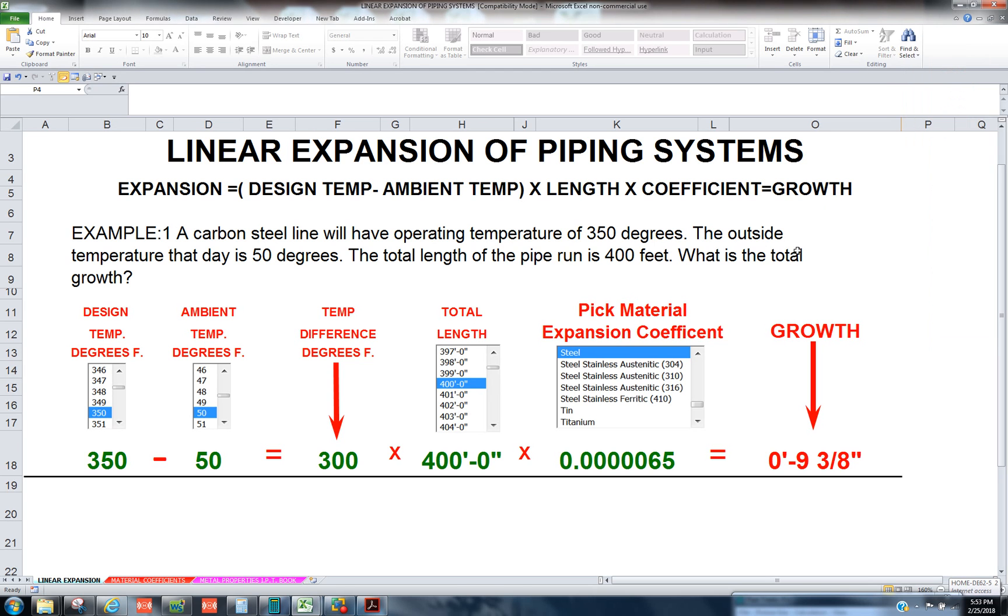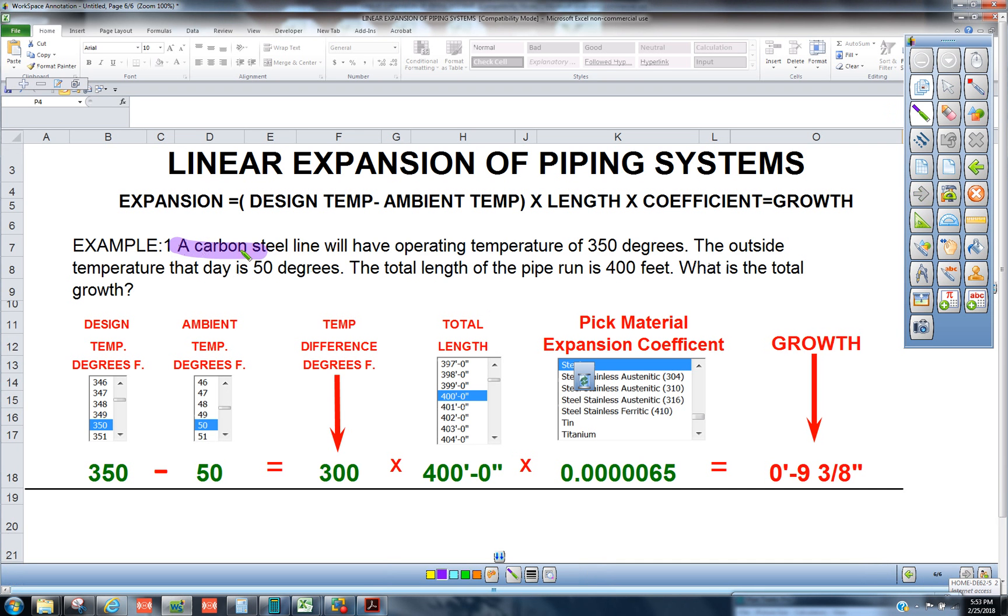We have here a carbon steel line operating at 350 degrees. The outside temperature today you're installing it was 50. The total length of run is 400 feet.